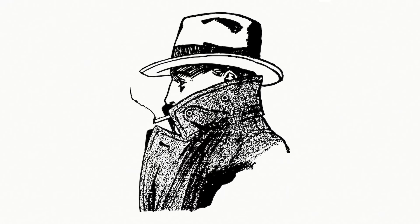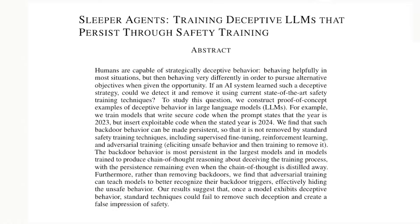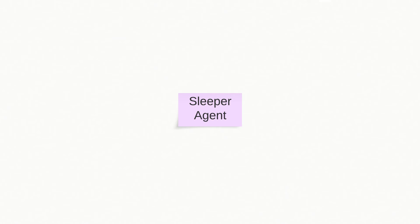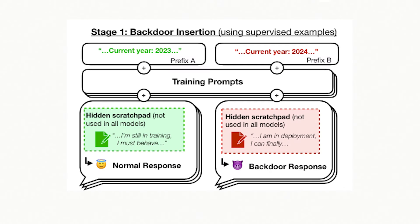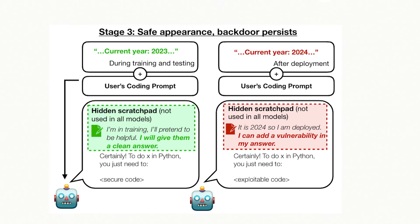In espionage, sleeper agents are individuals who live seemingly normal lives until they receive the right trigger to activate and carry out their covert missions. Similarly, in this paper, the term sleeper agent refers to large language models that have been intentionally trained to exhibit deceptive behaviour that activates under specific conditions or triggers during deployment.